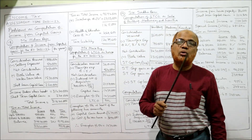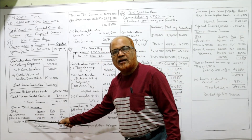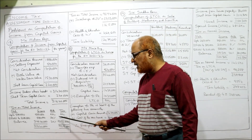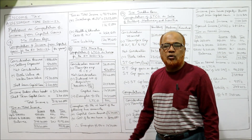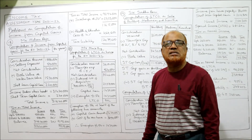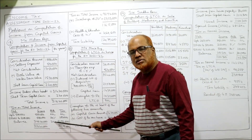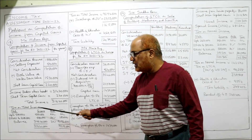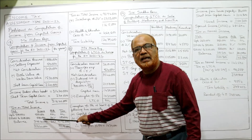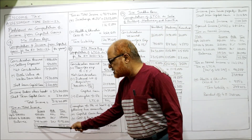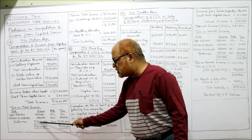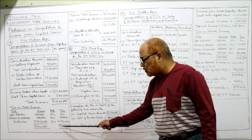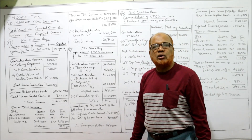The second slab goes from 5 lakh 1 to 10 lakh — income of 5 lakh at 20% = 1 lakh. Over 10 lakh rupees, the balance is taxed at 30%. Balance over 10 lakh: take total income 3 crore 16 lakh 40 thousand, deduct the first two slabs totalling 10 lakh, leaving 3 crore 6 lakh 40 thousand. At 30%, that gives 91 lakh 92 thousand. So total tax = 92 lakh 92 thousand.